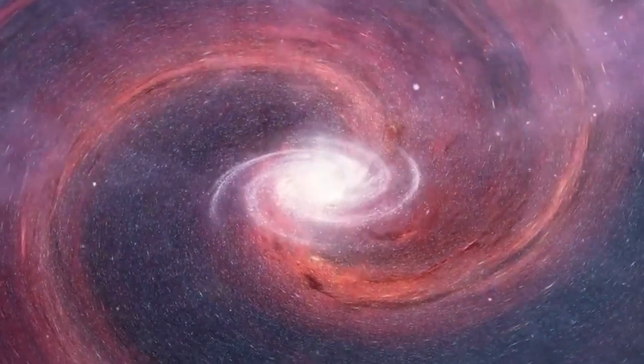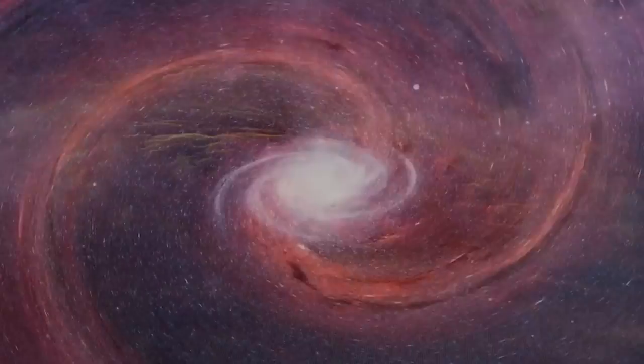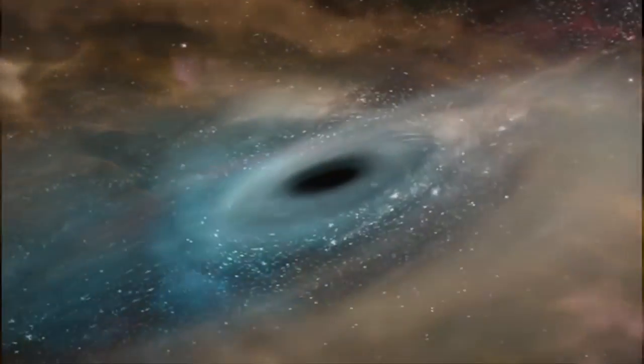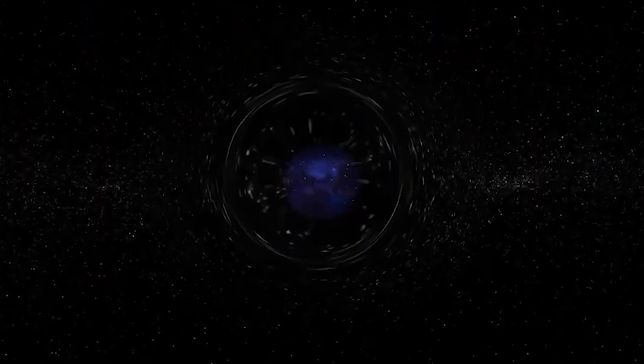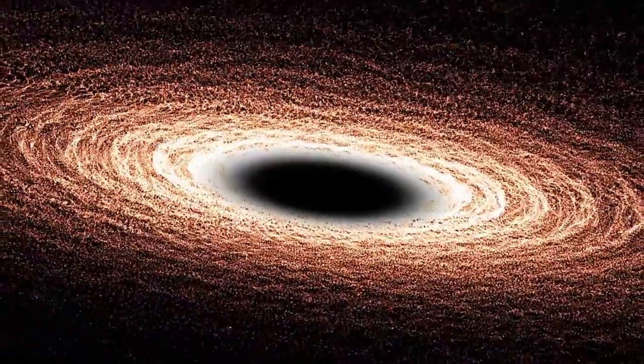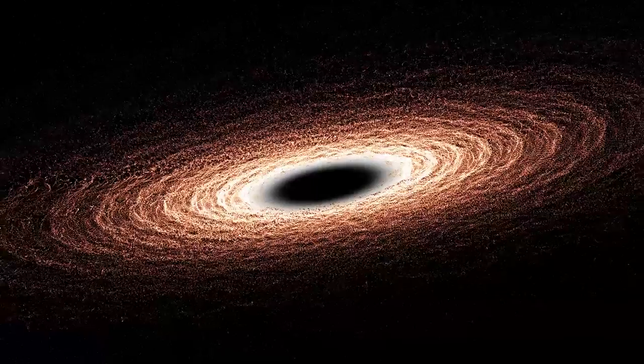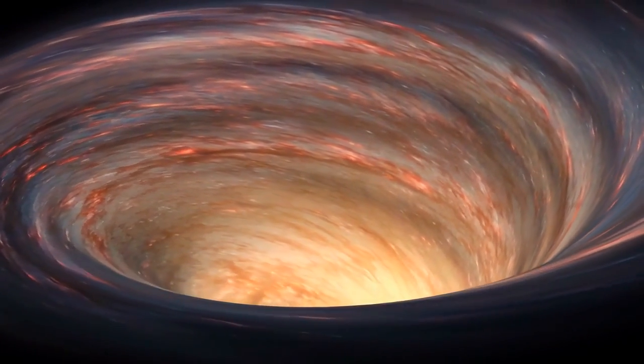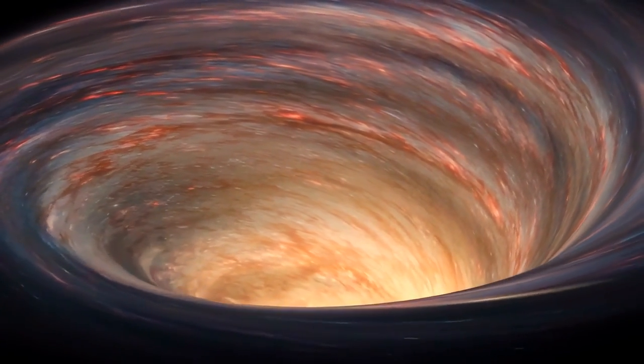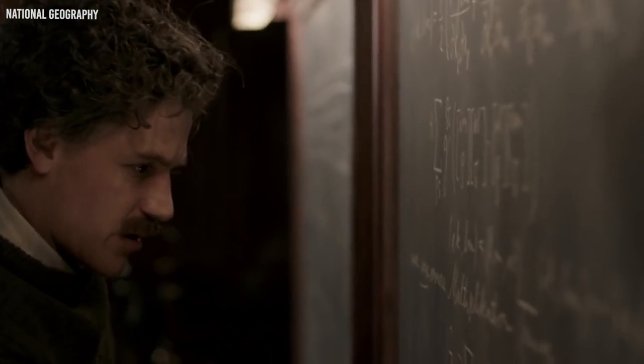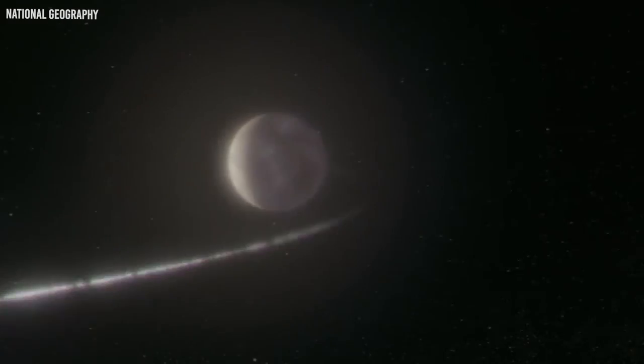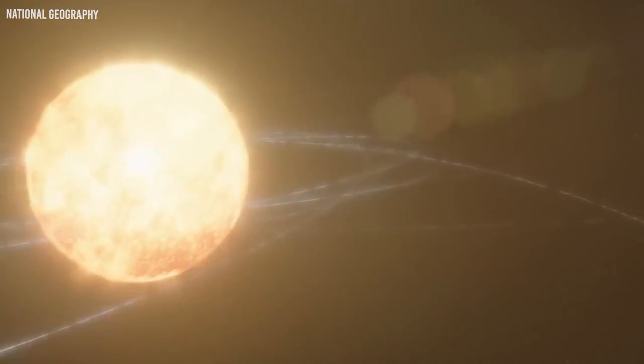When a star exhausts its nuclear fuel, it can no longer counteract the inward pull of gravity, causing it to collapse under its own weight. The collapse continues until the star's matter is concentrated in a highly dense region known as a singularity, surrounded by an event horizon. The singularity lying in the center is a region of infinite density and gravitational curvature. Our current understanding of physics breaks down at the singularity, making it difficult to describe what happens there.